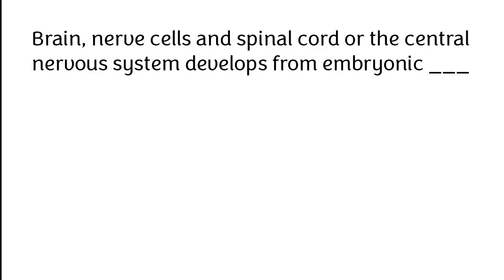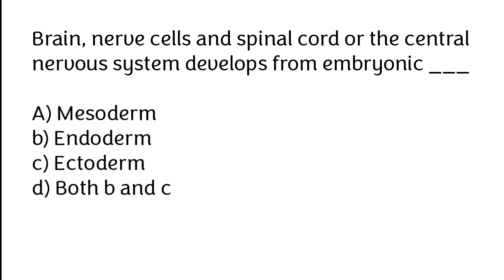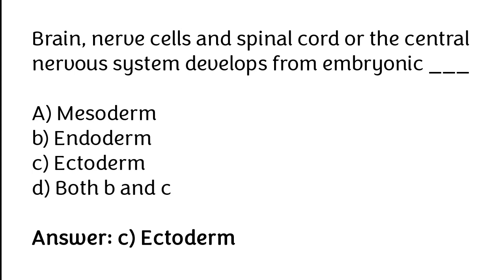Brain, nerve cells, and spinal cord — the central nervous system — develop from embryonic: A) Mesoderm, B) Endoderm, C) Ectoderm, D) Both B and C. The correct answer is option C — brain, nerve cells, and spinal cord develop from embryonic ectoderm.